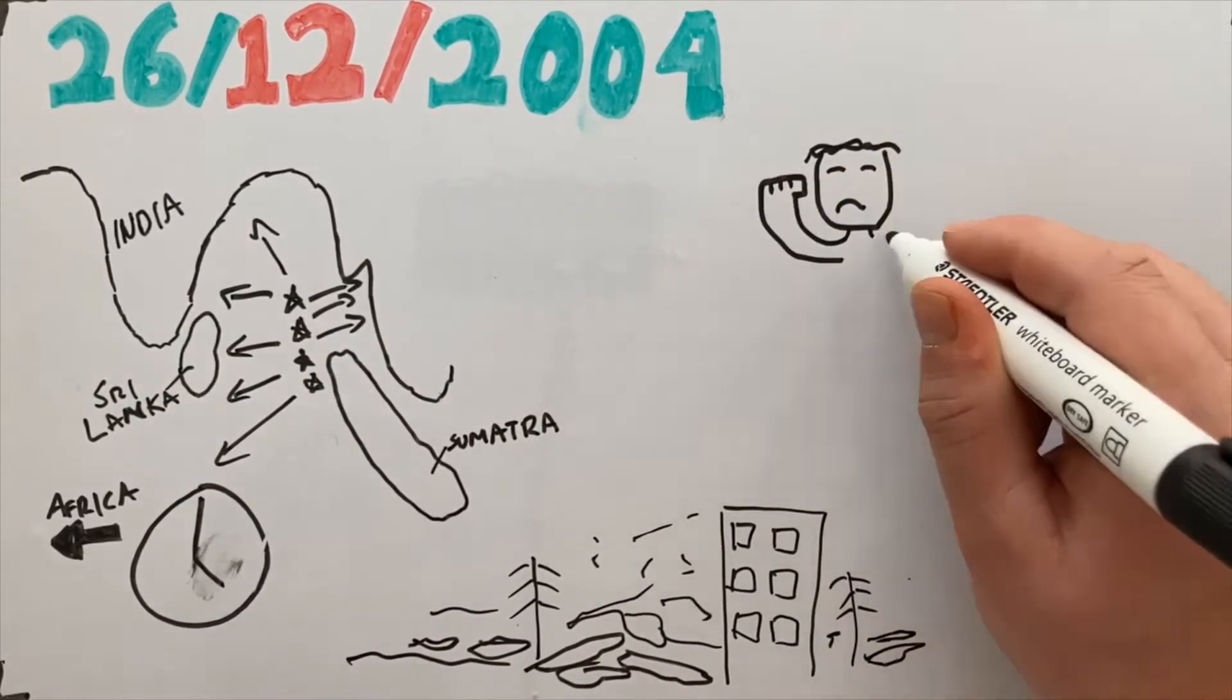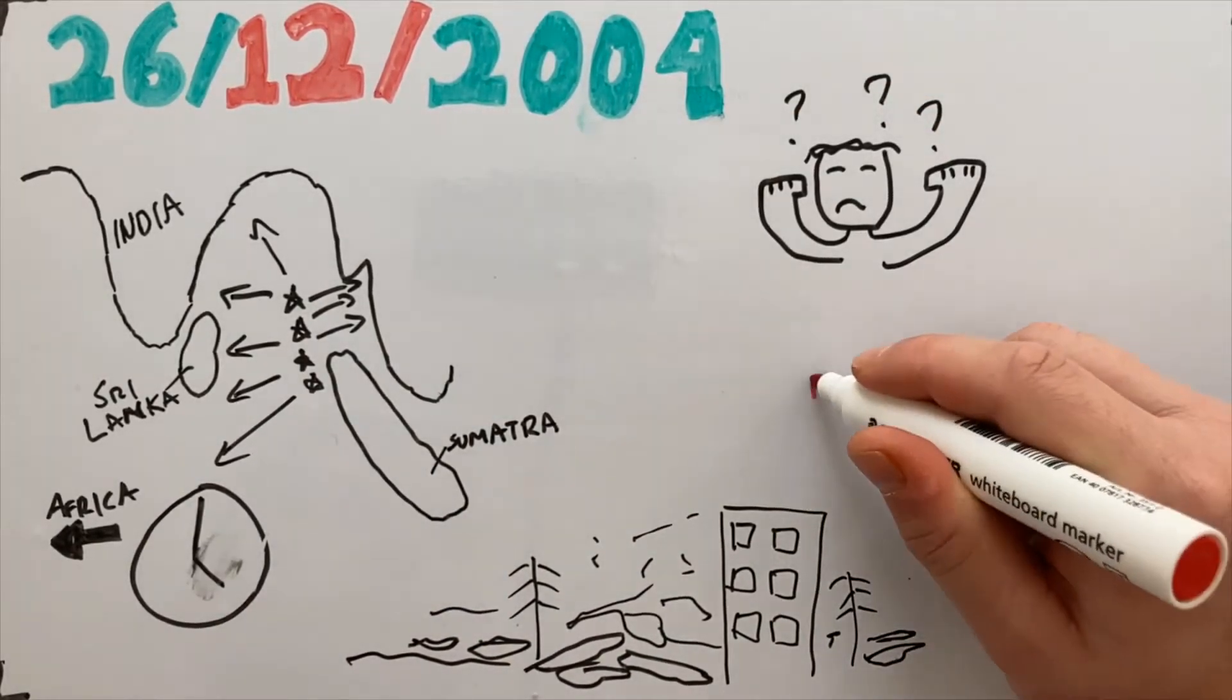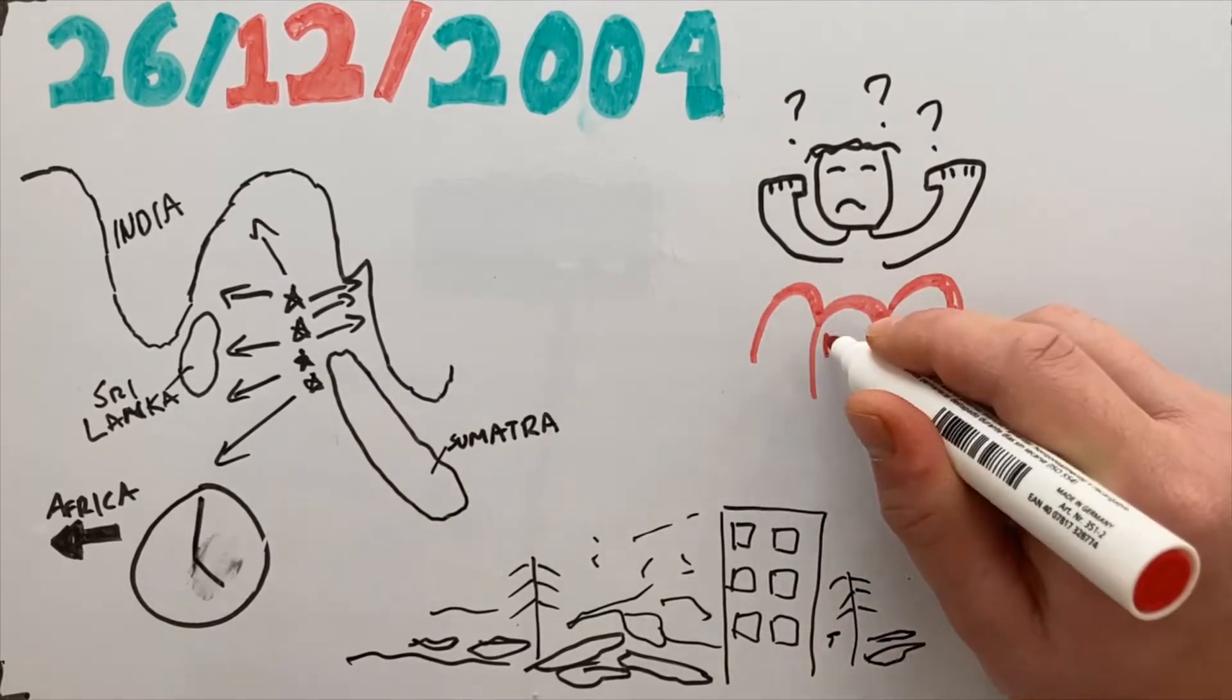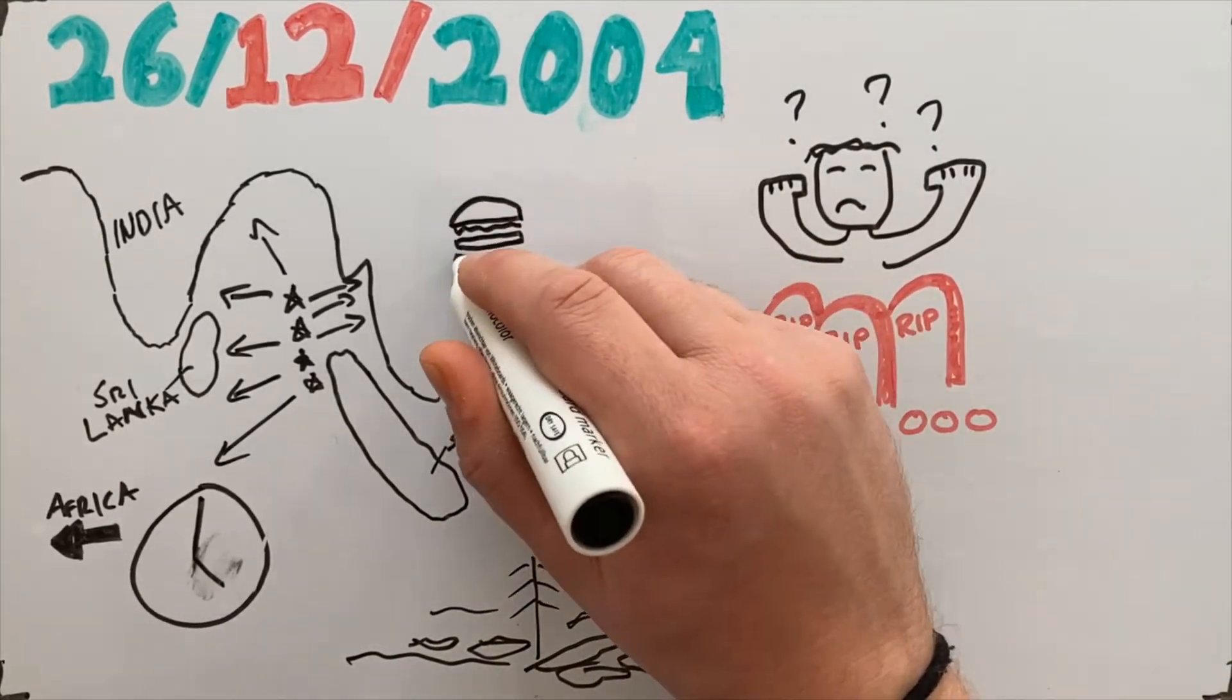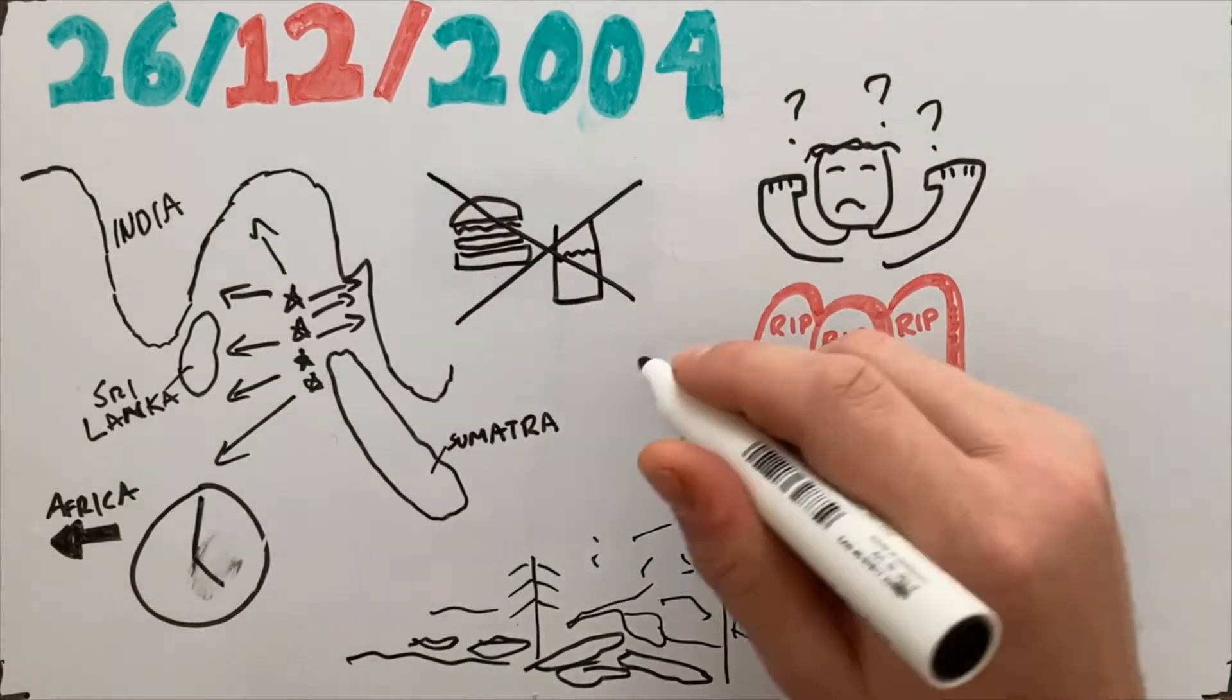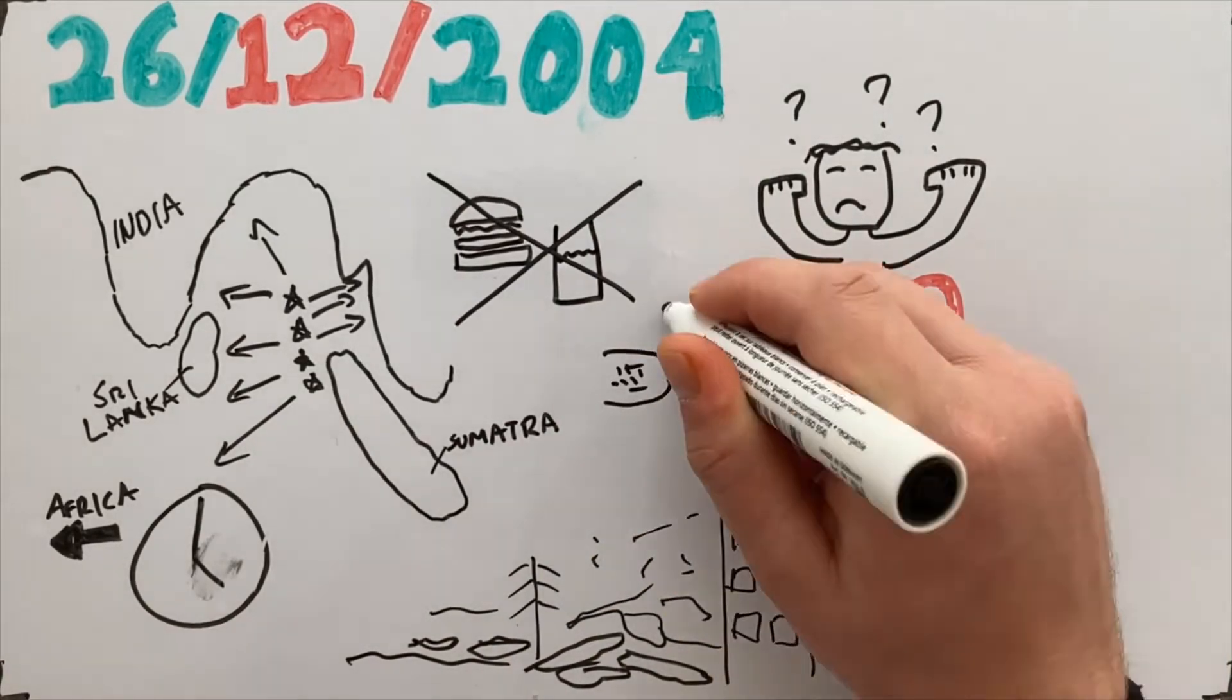Most of these places were hit hours after the earthquake struck, yet there was little warning. Hundreds of thousands of people needlessly died. Furthermore, it caused incalculable amounts of damage, disease and hunger to already poor communities.